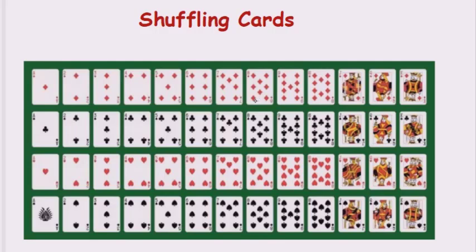Hello everyone, welcome to the practical series of AI. Today we'll be doing a program based on shuffling of cards. In the game of cards we have 52 cards total — 13 of diamonds, 13 of clubs, 13 of hearts, and 13 of spades. In this particular program we will see that when we shuffle the card and remove five cards, what cards we will be getting.